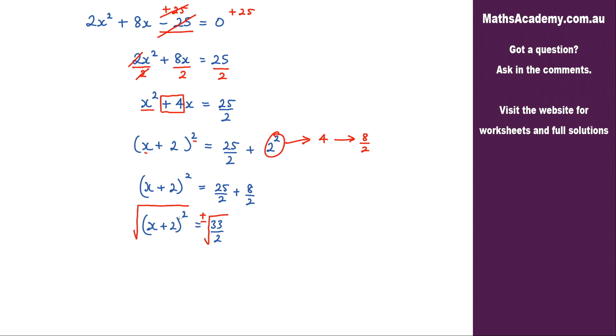Now on the left the square root and the squared will cancel. So what I'm left with here is x + 2, and that is equal to plus or minus the square root of 33 over 2.